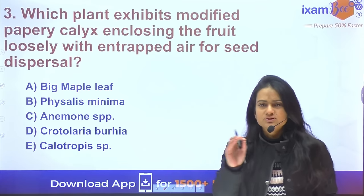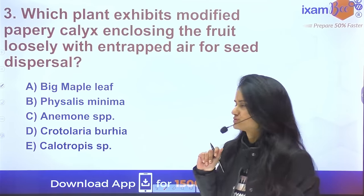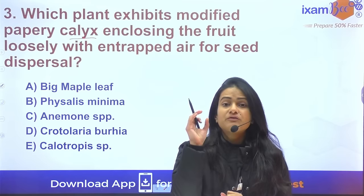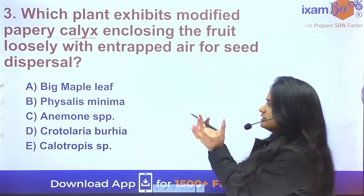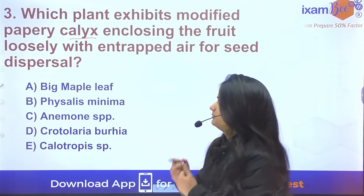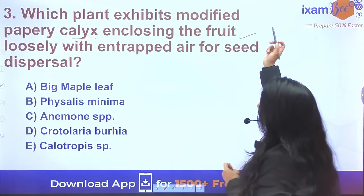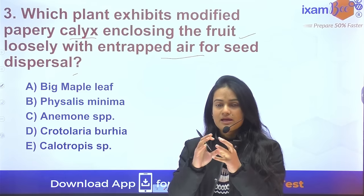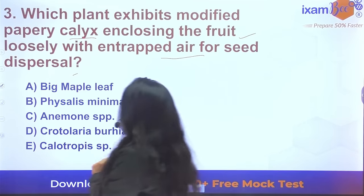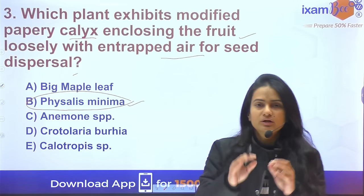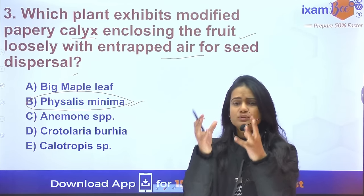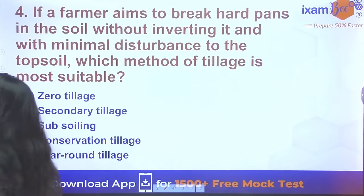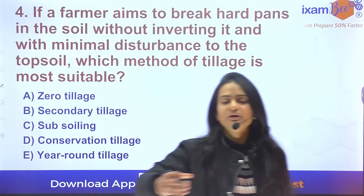Question 3: Which plant exhibits a modified papery calyx? This is generally a weed with a modified papery calyx that encloses the fruit loosely, with entrapped air for seed dispersion. The whole structure forms around the seed so that it can be dispersed — that is the main objective.